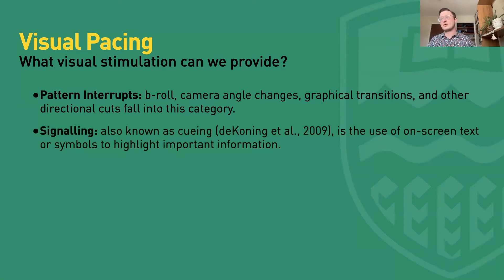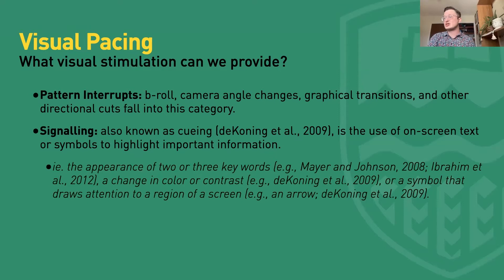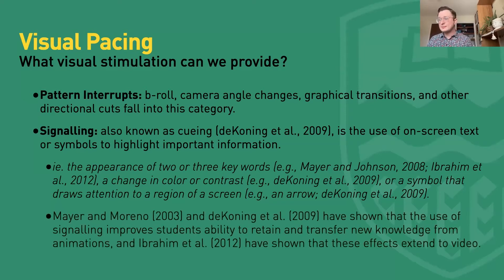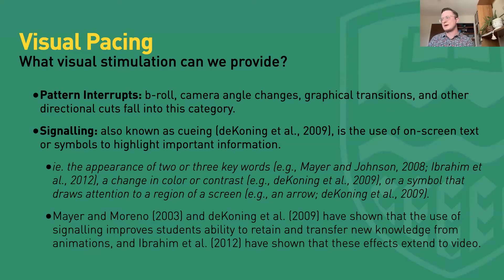The next variety of visual pacing is signaling, also known as cueing. That's the use of on-screen text, symbols, graphics, or even stock footage to convey important information in a new way. Examples include two or three keywords, a change in color, or a symbol that draws attention to a region on screen. Meyer, Moreno, and Koenig in 2009 showed that signaling improves students' ability to retain and transfer new knowledge from animations, and Ibrahim et al. in 2012 showed these effects extend to video. So not only are you making your videos more captivating, you're also helping students digest and transfer the content.